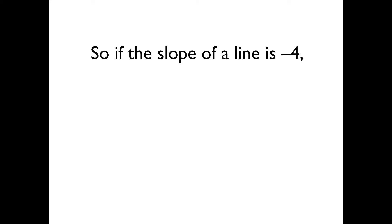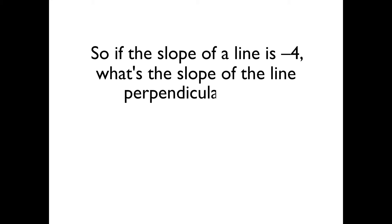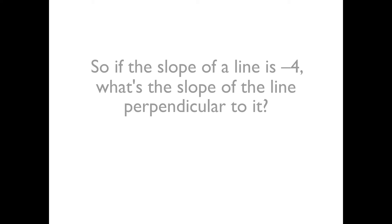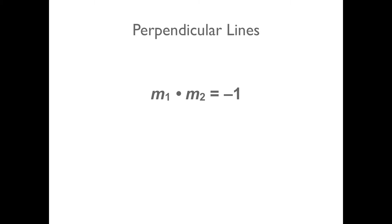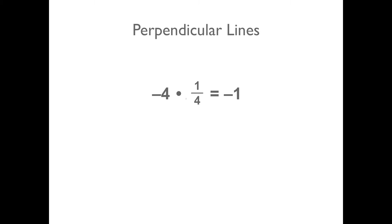If the slope of a line is negative 4, what's the slope of the line perpendicular to it? If the slope is already negative, or if it is an integer, what is the value of the perpendicular slope? We know the product of two perpendicular slopes is negative 1. So, if the slope is negative 4, we need to determine what to multiply negative 4 by to get negative 1. Negative 4 times 1 fourth equals negative 1, so the slope of the perpendicular line is positive 1 fourth.